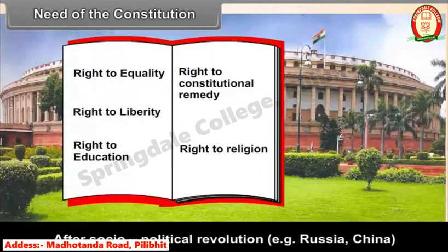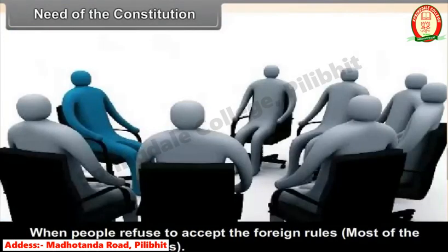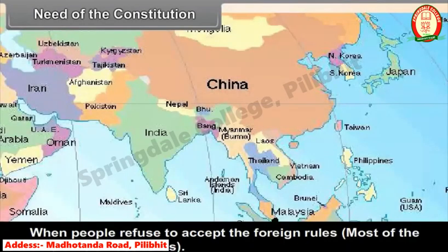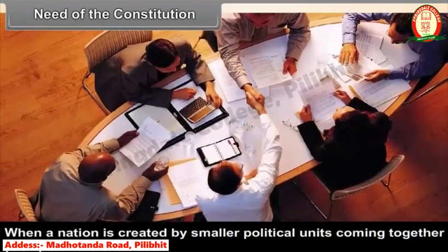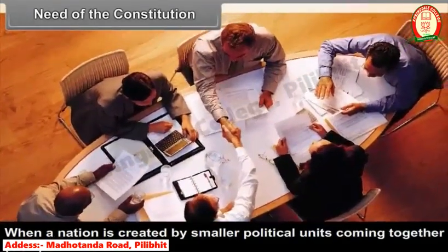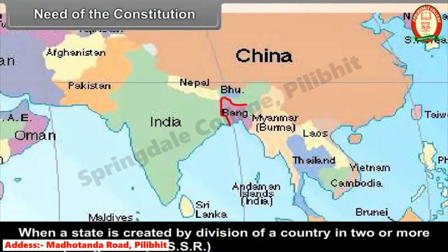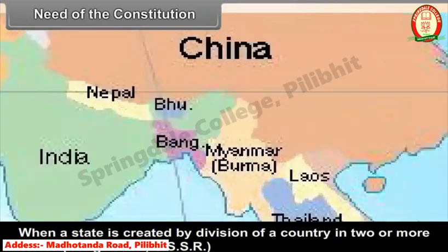In which situations does the need for a Constitution arise? After a socio-political revolution, for example Russia and China. When people refuse to accept foreign rule, as in most Afro-Asian countries. When a nation is created by smaller political units coming together, as in the USA. When a state is created by the division of a country into two or more states, as in Bangladesh and the USSR.